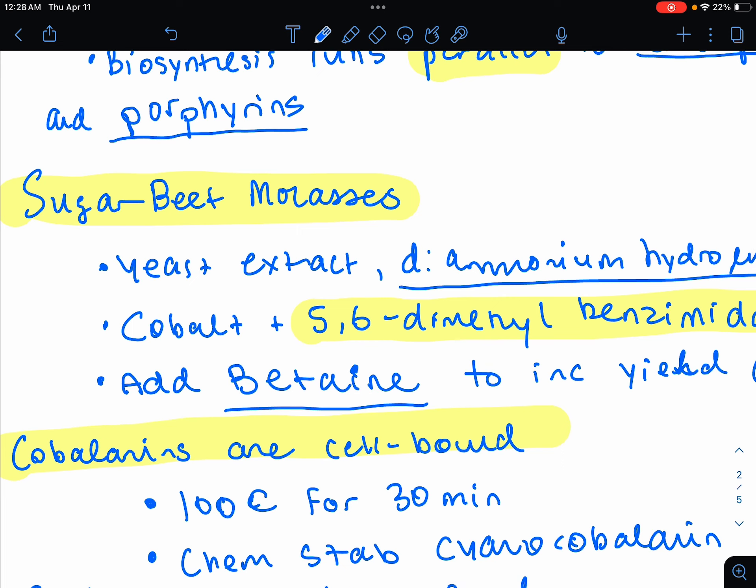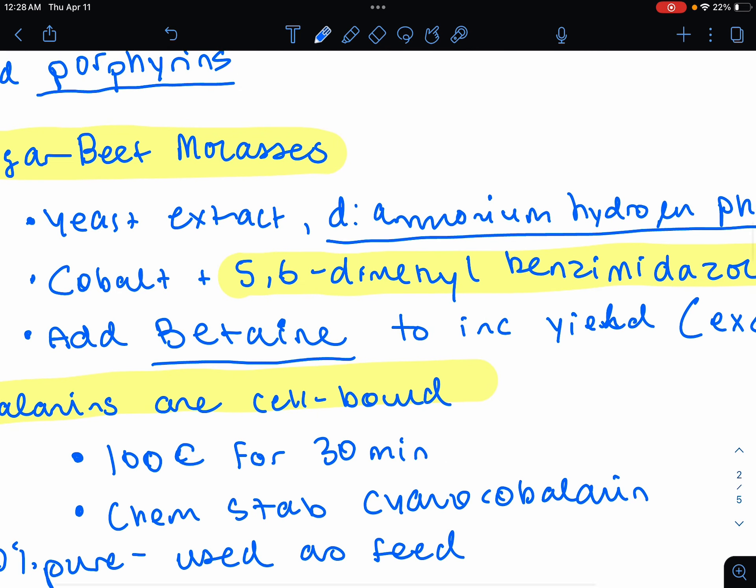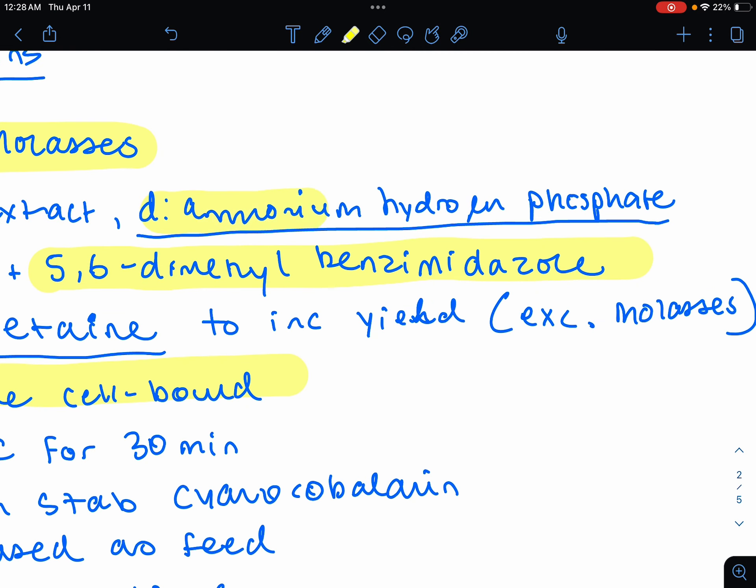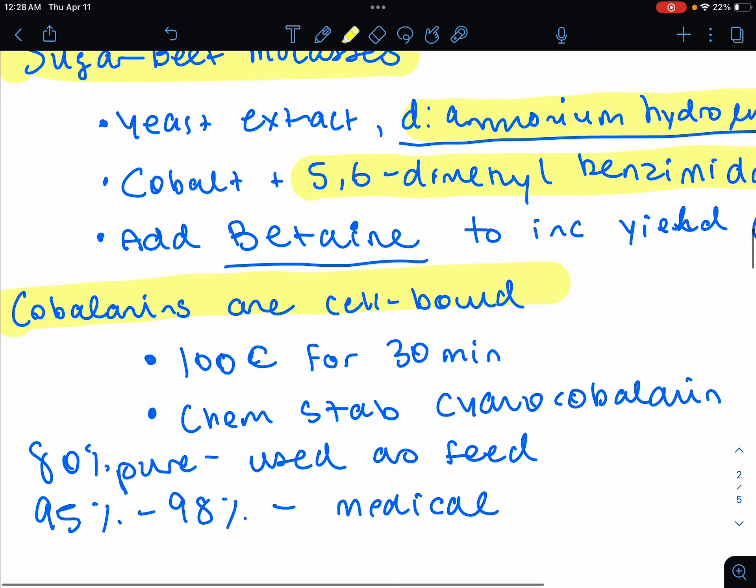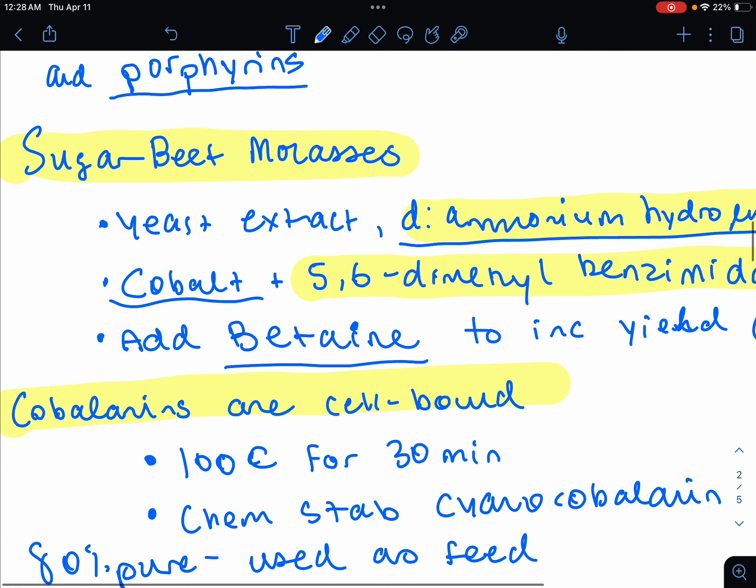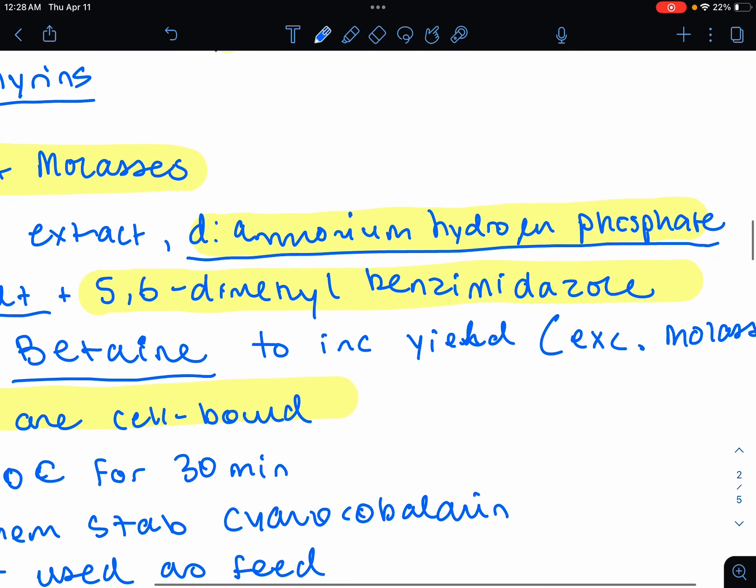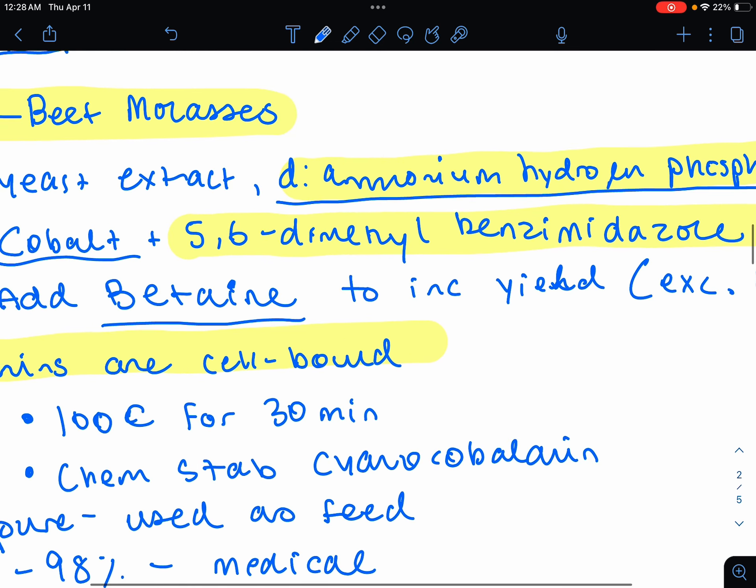The feed is going to be different than our B2, or riboflavin you've used. Corn steep liquor, this one, you're going to be using sugar beet molasses. However, the nitrogen source is kind of the same. You have yeast extract. However, this part is different. You have diammonium hydrogen phosphate as another nitrogen source. You also have to add cobalt because you remember we talked about the structure of B12. You have the tetrapyrrole ring and then you have a cobalt in the center. You also need 5,6-dimethylbenzimidazole. And these are the supplements.